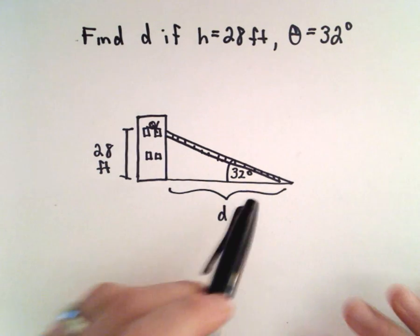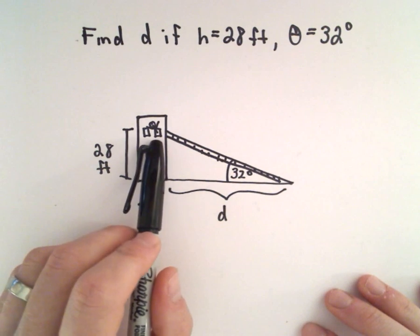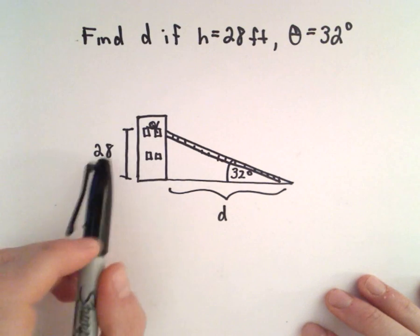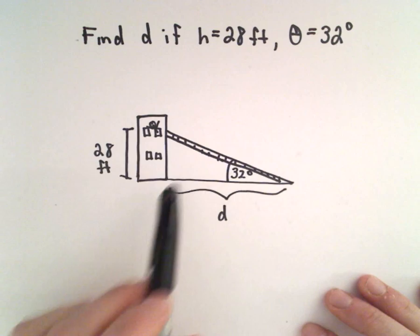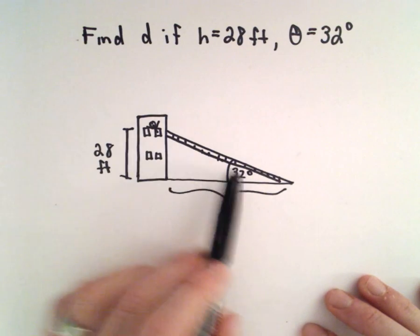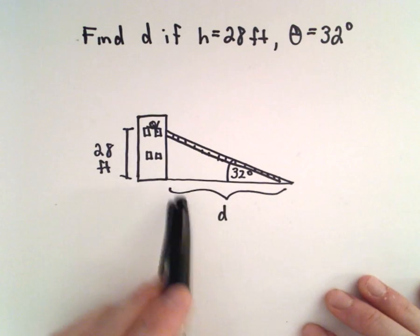Okay, here we have a firefighter who's going to save a person in a second-story building. The height to the window where the person is is 28 feet, and the angle of elevation to the ladder is 32 degrees.